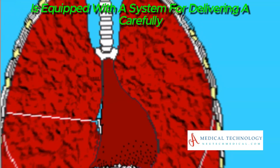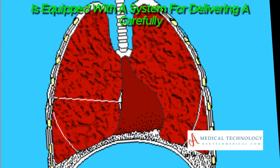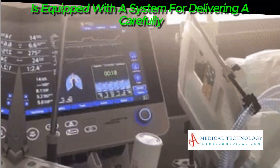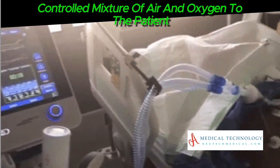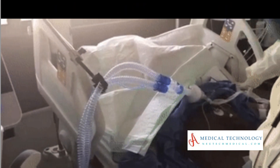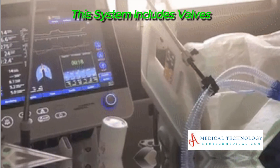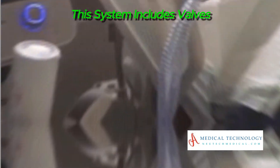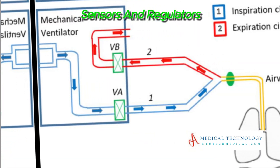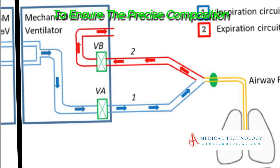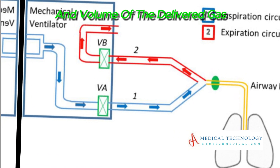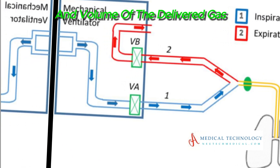The ventilator is equipped with a system for delivering a carefully controlled mixture of air and oxygen to the patient. This system includes valves, sensors, and regulators to ensure the precise composition and volume of the delivered gas.